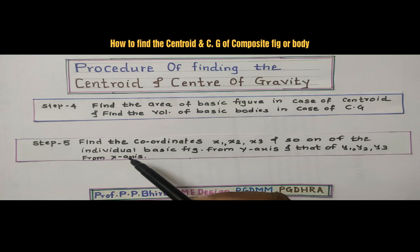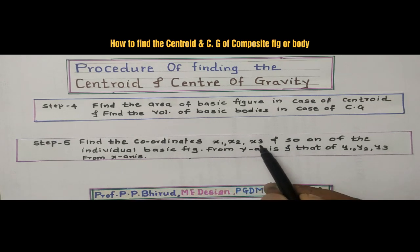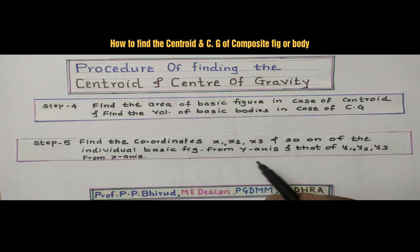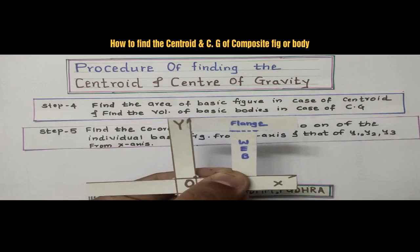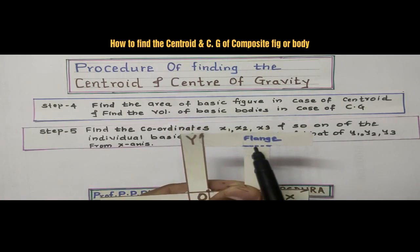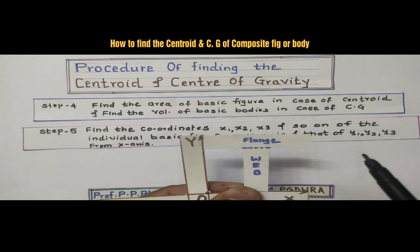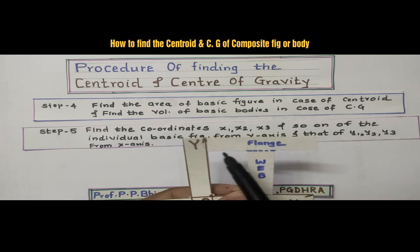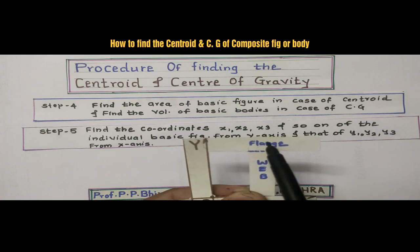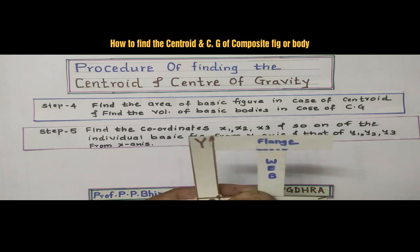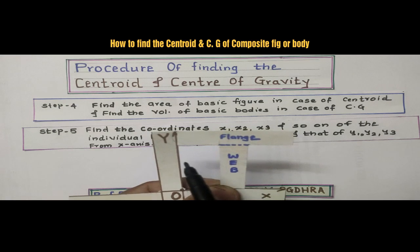Now, step number five: find the coordinates x1, x2, x3 and y1, y2, y3 of the individual basic figures from the x and y axes respectively. In the T-section, we will find x1, x2, y1, y2. But here it is symmetrical, so since the centroid or CG will lie on the y-axis, we can get x-bar directly without calculating it.